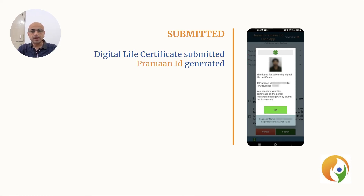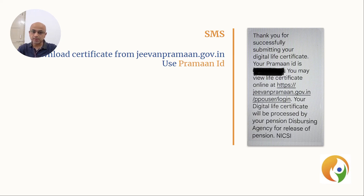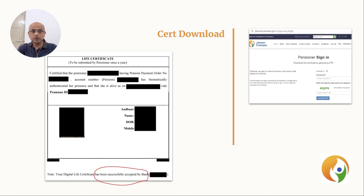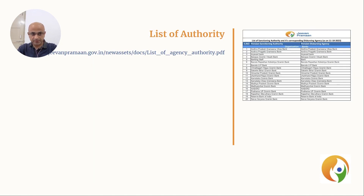It will also display the Praman ID generated. The pensioner will also get an SMS with the Praman ID and a URL where to download this certificate. You can go to jeevanpraman.gov.in URL mentioned in your SMS, enter your Praman ID and OTP. It displays the life certificate which you can download or print. The certificate will also indicate at the bottom that it has been successfully accepted by the pensioner's agency. This website page lists all agencies related to government, banks, etc., whose pension you can submit using the Jeevan Praman app. Note that LIC is not in this list — for LIC, you should use their LIC digital app, which you can check in my other videos linked in this video description.